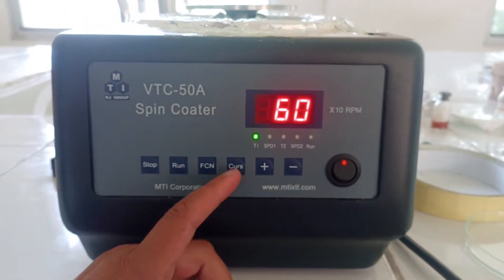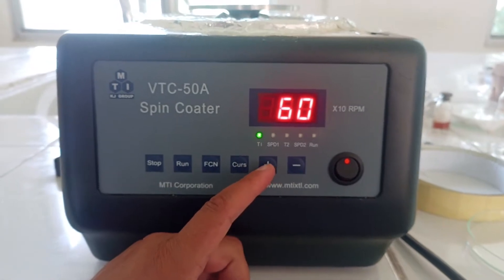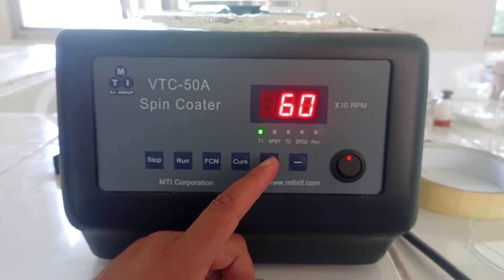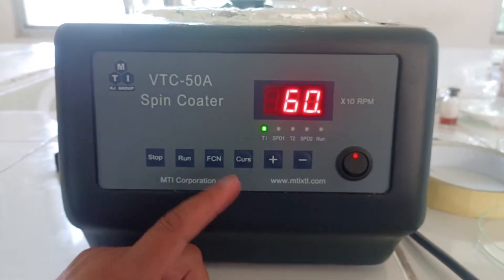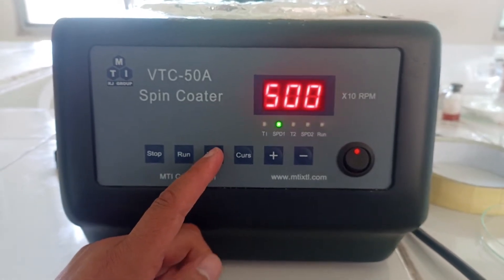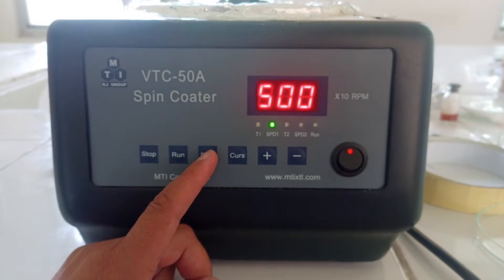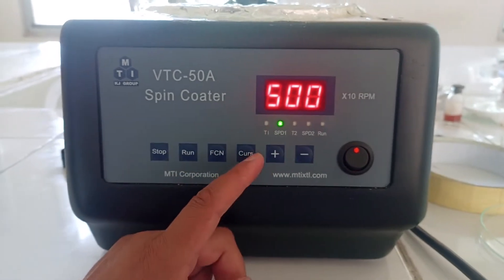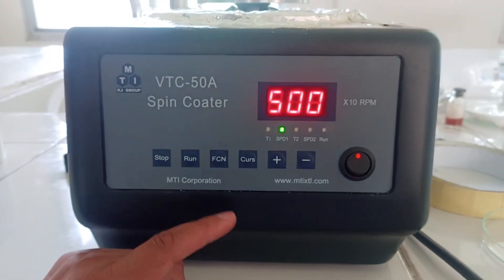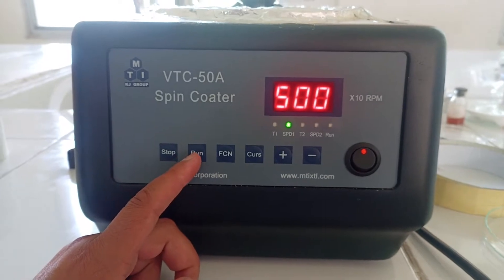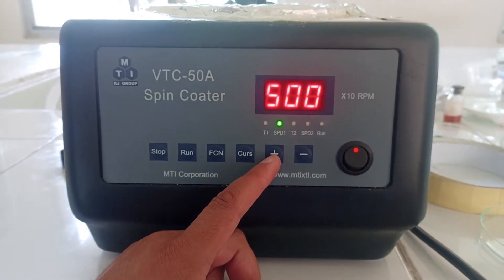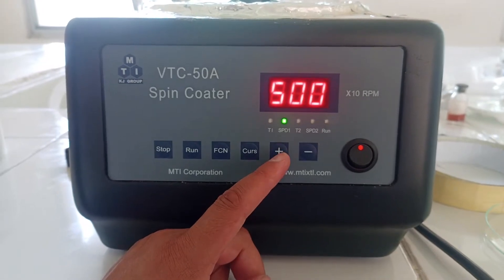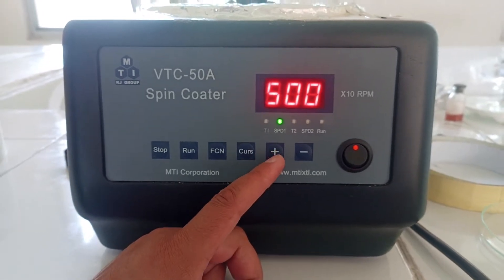First we will take the time, so we can adjust time from here, and then we will shift to the revolution speed. Revolution speed here is mentioned 500 RPM times 10, so it is 5000 RPM. We can use these cursors to up and down the RPM and the time.